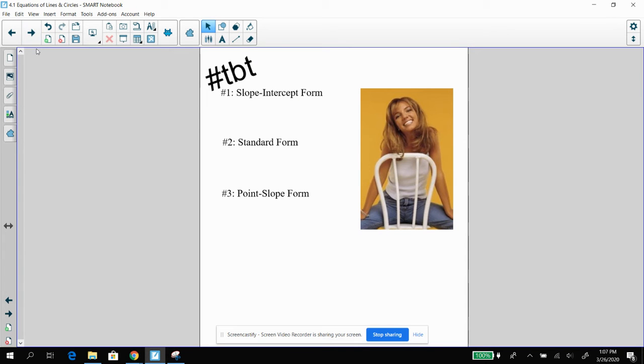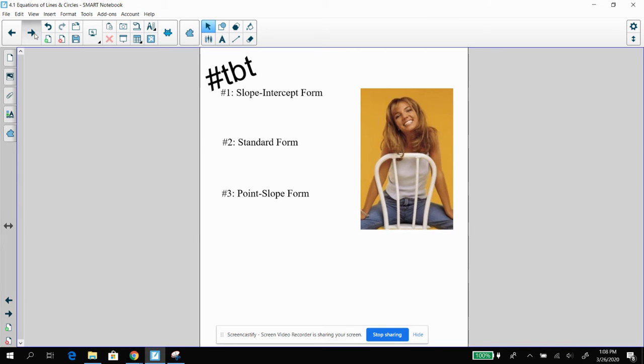We are going to start by throwing it back a little bit. Now, I want you to think about these three equations of a line: the slope intercept form, standard form, and point slope form. And I want you to do your best to remember what the heck these guys are. So slope intercept form, as we know and love, this is the very first thing that we learned in algebra.